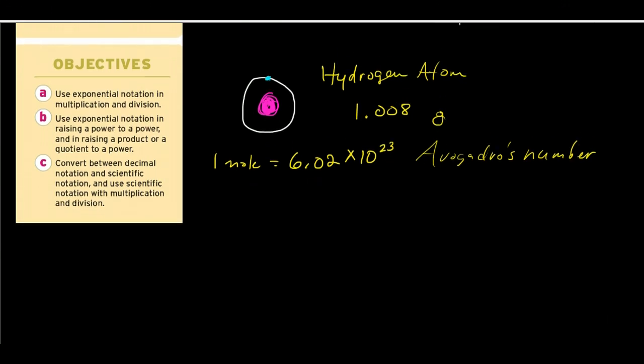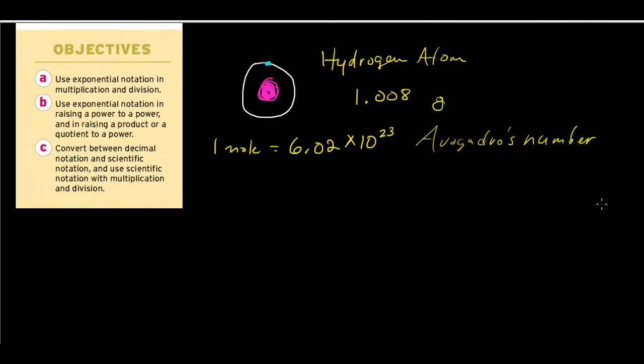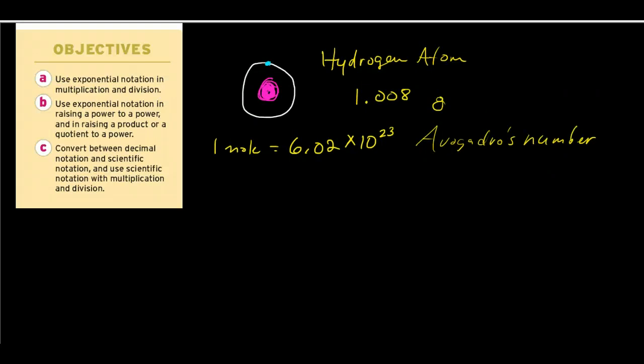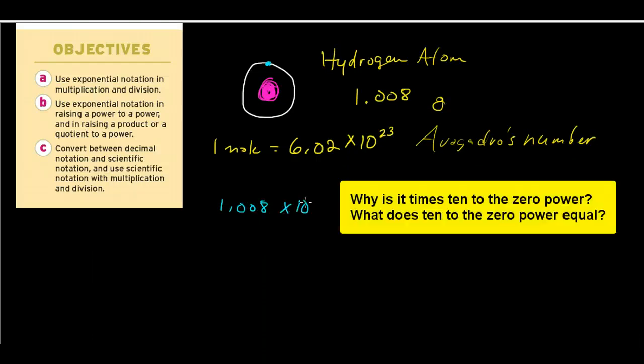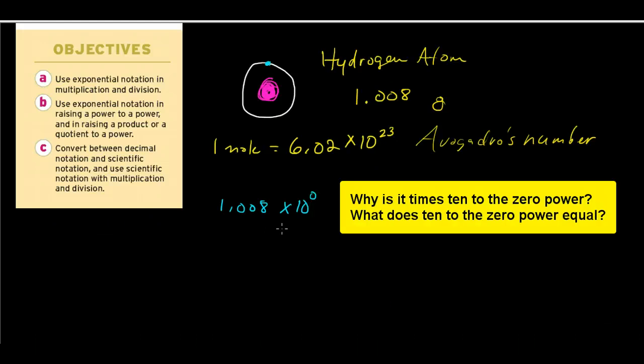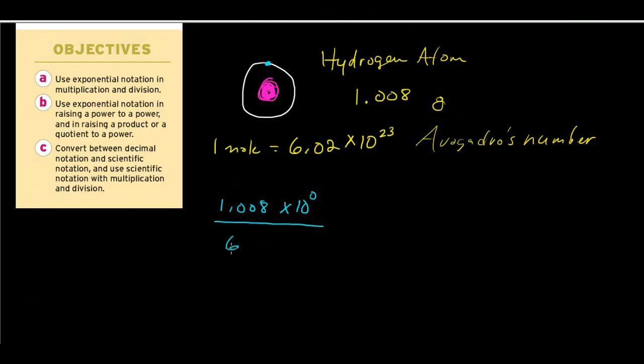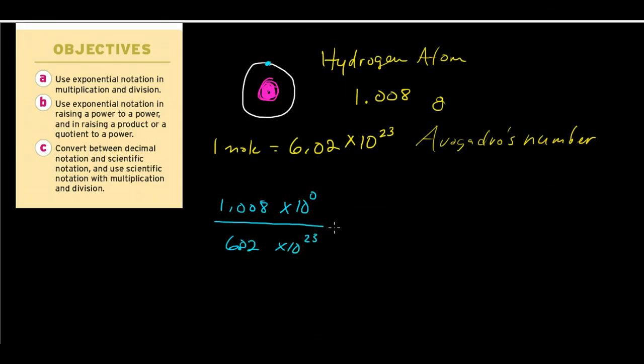Okay. Well, with that information, what we can say is, if that's the case, then one specific hydrogen atom is 1.008, and we'll write that in scientific notation, times 10 to the 0 power, divided by Avogadro's number, 6.02 times 10 to the 23rd power.